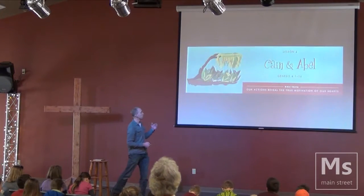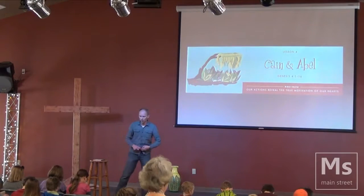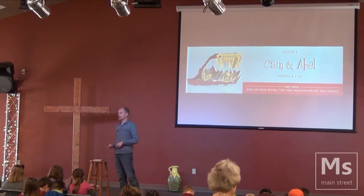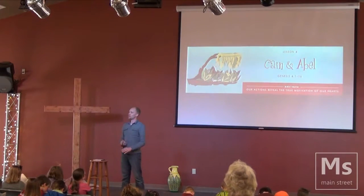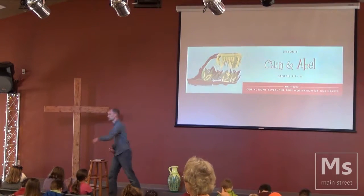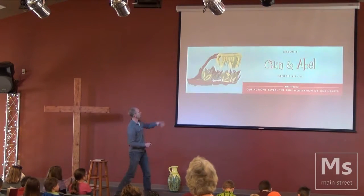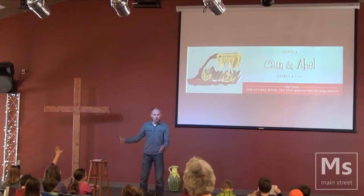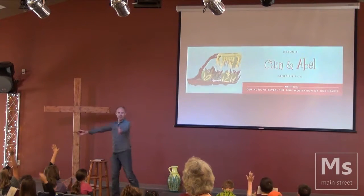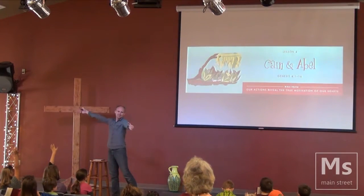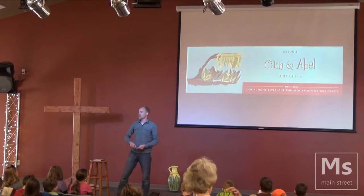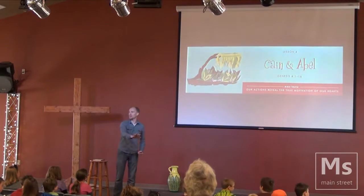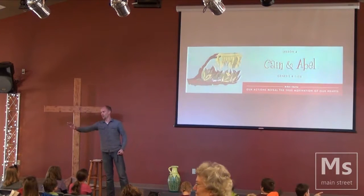Go to Genesis chapter 4. Look for the number 4 — we're going in order, guys, it's not tricky. What does it say above the number 4? Cain and Abel. Yes, this is Cain and Abel. But what did Cain do to his brother Abel? He killed him. Yes. They should have said in the title 'Cain murders brother.'